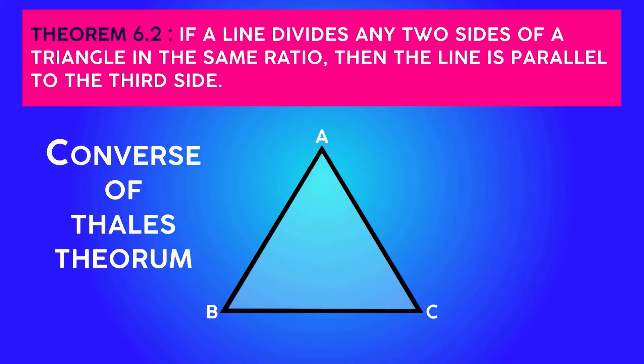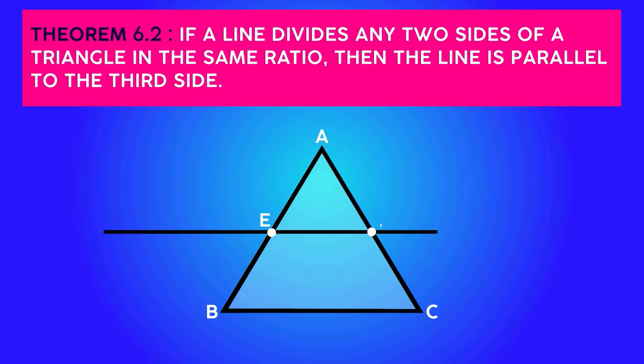Theorem 6.2: This is the converse of Thales theorem. If a line divides two sides of a triangle in the same ratio, then this line is parallel to the third side.